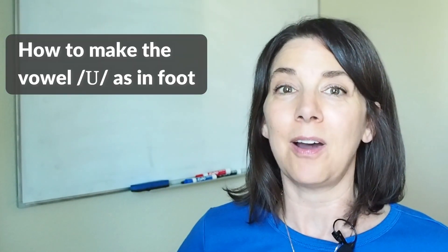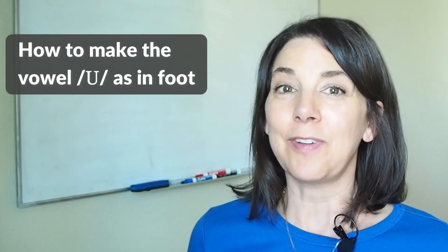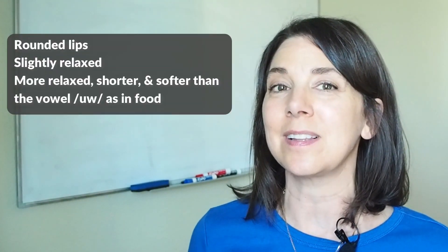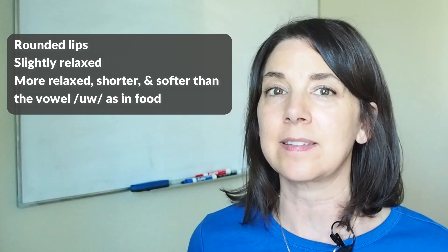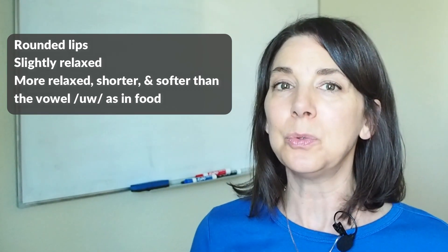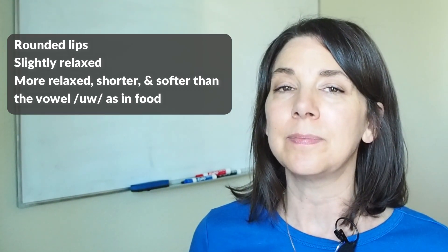First, let's talk quickly about how to make the vowel uh. The vowel uh is made with rounded lips, but notice that the lips are kind of relaxed. Uh. It's not oo, it's uh. What you can do to make the vowel uh is make the vowel oo and then relax it. Oo, uh, uh. Let's look at some example words.